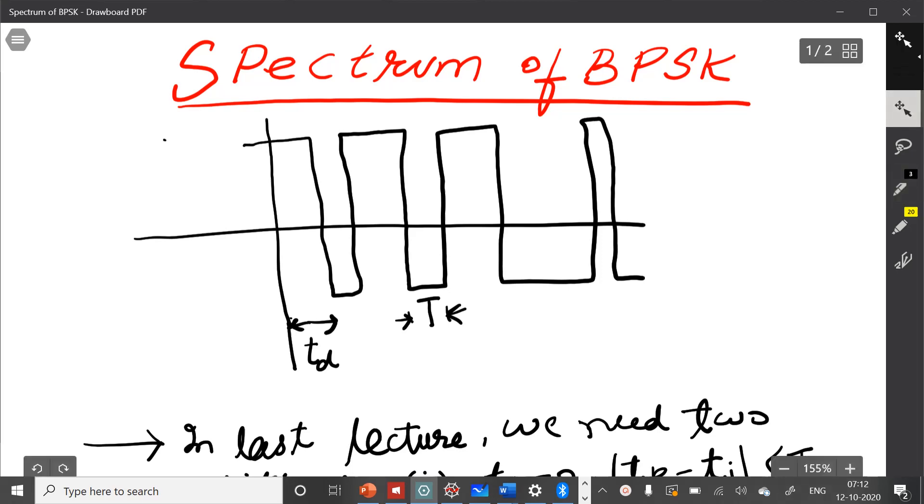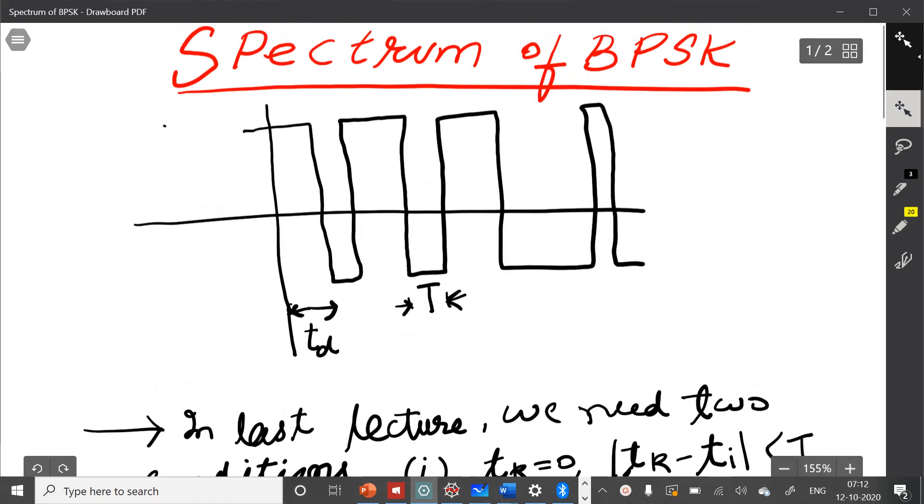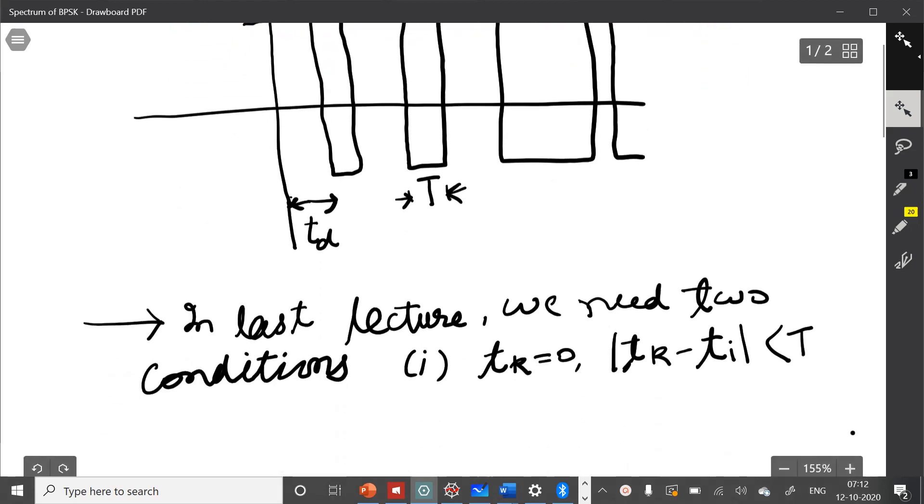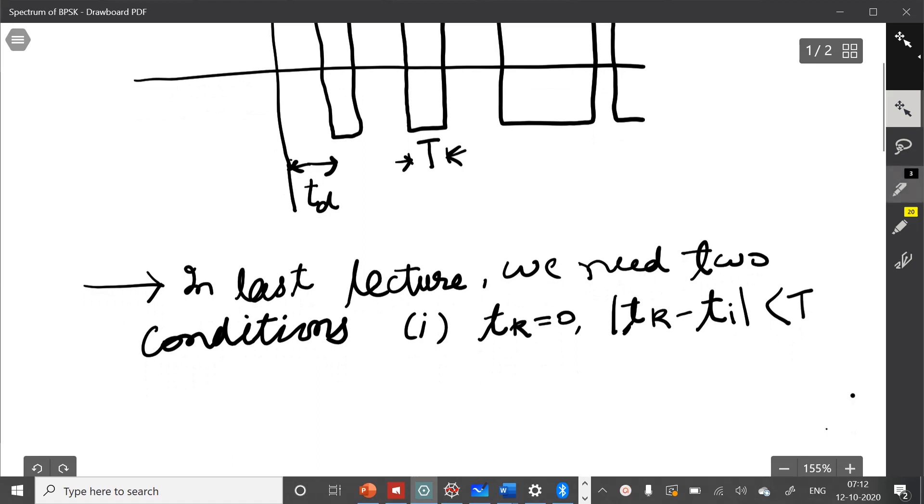Welcome to the next lecture of wireless communication. Today we will continue with our discussion of random binary wave. In last lecture we showed you how to compute the autocorrelation function. There may be some doubts there.